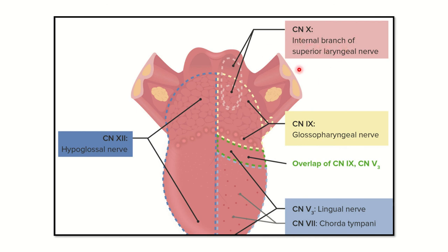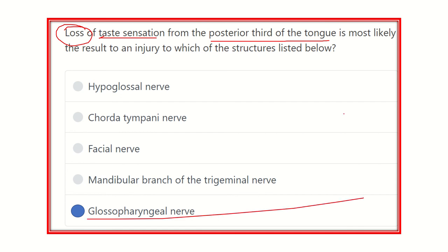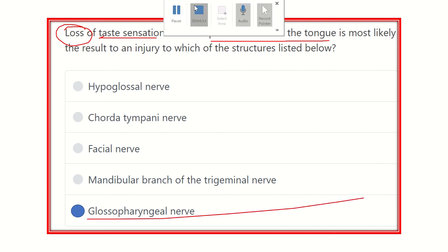The extreme posterior part is supplied by the vagus nerve via the internal laryngeal branch of the superior laryngeal nerve. Therefore, loss of taste sensation in the posterior one-third of the tongue is due to injury of the glossopharyngeal nerve. Thank you.